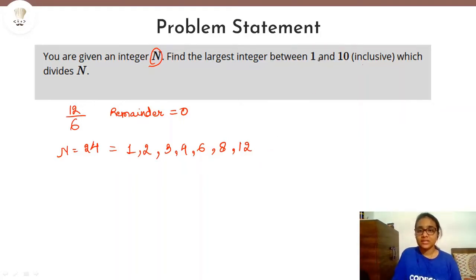But what is given here is that we are supposed to find out the highest, the largest integer between 1 and 10 which divides N. So definitely this 12 will not qualify because 12 is greater than 10. So we have to find the largest integer among these numbers. And you can easily see that it is 8.